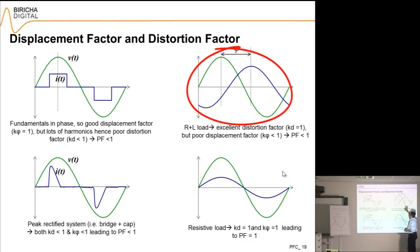On this one, I've got two sinusoids. You will see that the voltage is a sinusoid, the current is also a sinusoid, so there's hardly any distortion between them. You've got a distortion factor of one, but they're phase shifted massively from each other, so you've got a poor displacement factor, and again, therefore power factor is less than one.